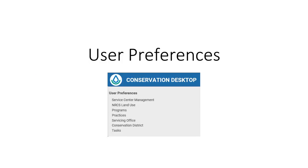User preferences must be set when using Conservation Desktop for the first time, and can be updated as needed. The selected and default service centers are used for searching for clients, case files, and agreements in Conservation Desktop, and for Conservation Desktop tools. Preferences for NRCS land uses, programs, and practices can be used to customize these choice lists. The servicing office and conservation district preferences will be used in Conservation Products. Task preferences allows you to control how tasks are displayed in the task list.